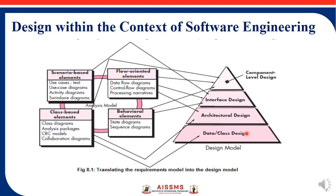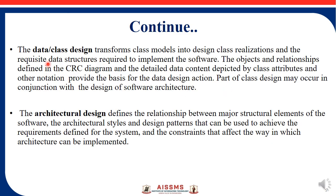The architectural design provides an overview of any software. The interface design, also called high-level design, contains actual details of the design. At the component level, there are more details regarding the design. We can see the data classes and design that transform class models into design classes and structures required to implement the software.